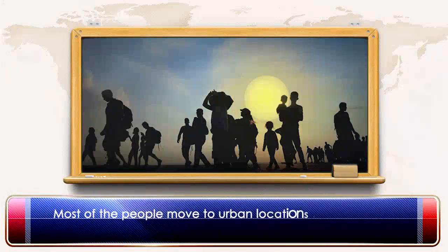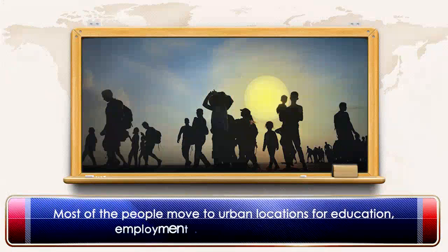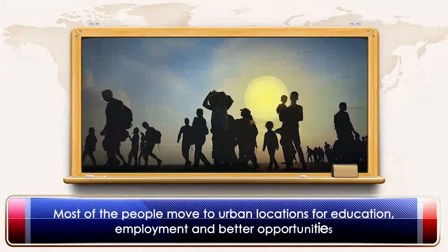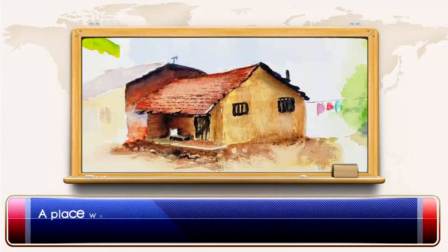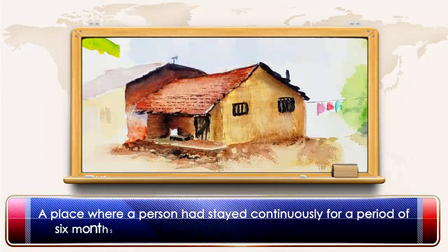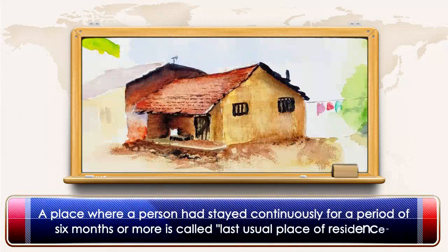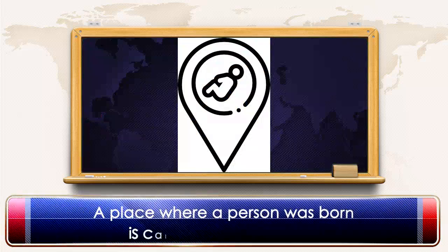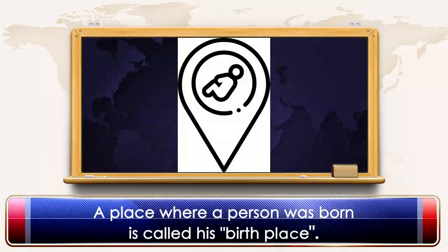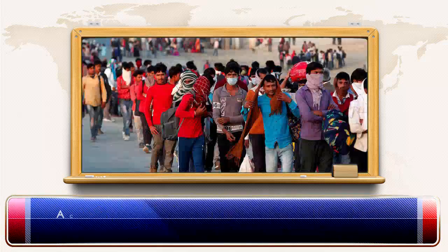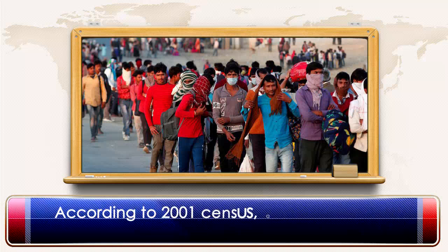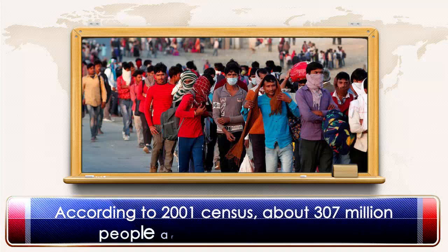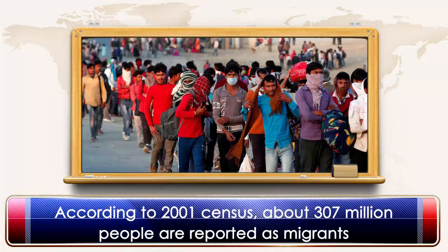Most of the people move to urban locations for education, employment and better opportunities. A place where a person had stayed continuously for a period of 6 months or more is called last usual place of residence. A place where a person was born is called his birthplace. According to the 2001 census, about 307 million people are reported as migrants.